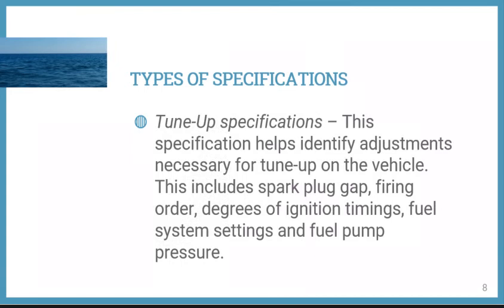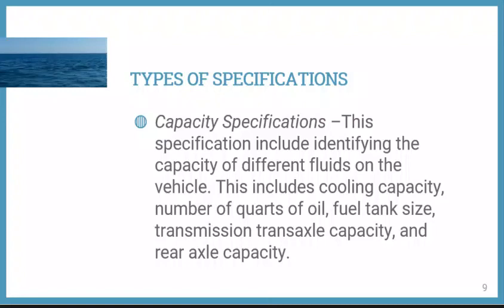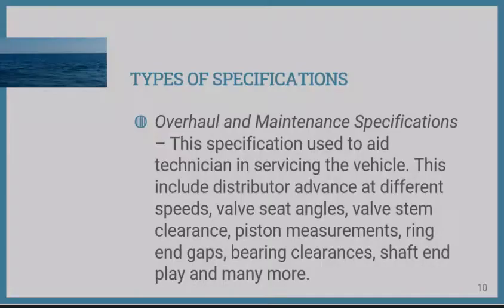The second type is the tune-up specification, which helps identify adjustments necessary for a tune-up on the vehicle. This includes spark plug gap, firing order, degrees of ignition timing, fuel system settings, and fuel pump pressure. The third type is the capacity specification, which identifies the capacity of different fluids on the vehicle — cooling capacity, number of quarts of oil, fuel tank size, transmission, transaxle capacity, and rear axle capacity.